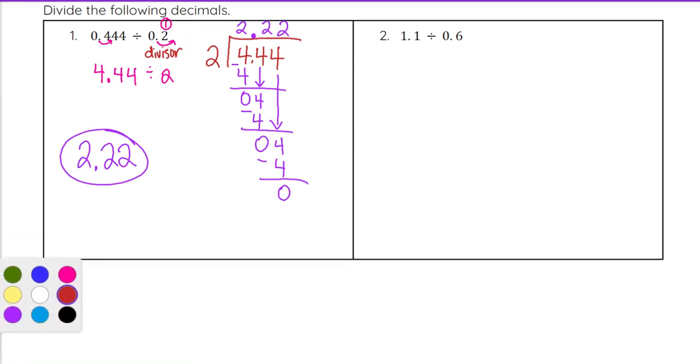So let's take a look at number 2. It's a similar problem. So we have decimal digits in both the top and the bottom, if I thought of this as a fraction, or both in the dividend and the divisor. So our divisor is 0.6. So I want to go ahead and move that one decimal point over to the right to make this just a 6.